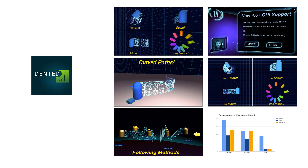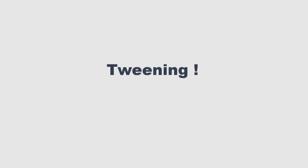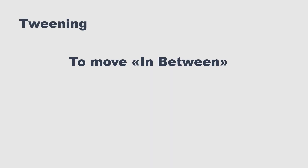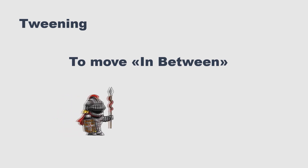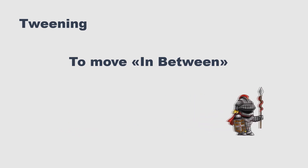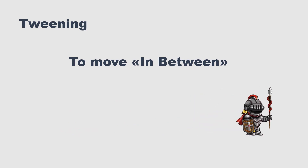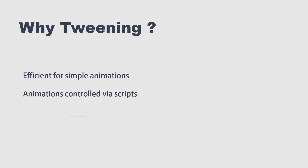LeanTween is made by Dented Pixel and it's available for free in the Unity Asset Store. If you want to create an animated UI or an animated sprite in a 2D game, you can use tweening. Tweening means to move in between, so a tween is an animation happening between two points. LeanTween is a free tweening library delivered by Dented Pixel to help developers do their animations in an easy way. Now let's go back to Unity and import the tweening library from the Unity Asset Store.